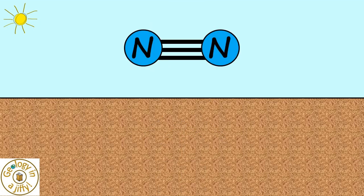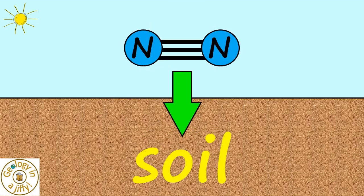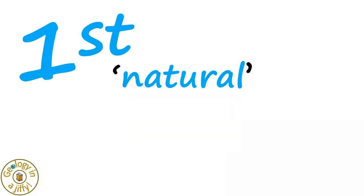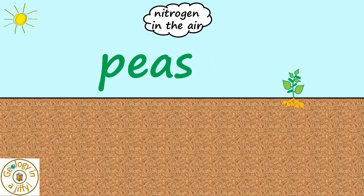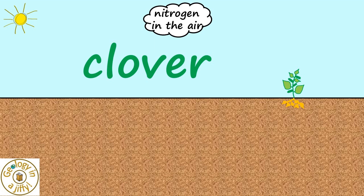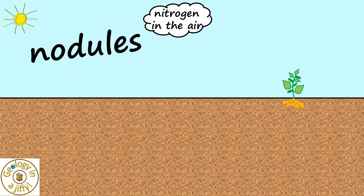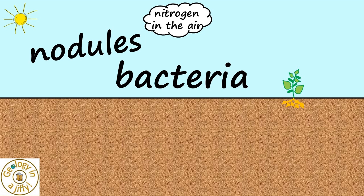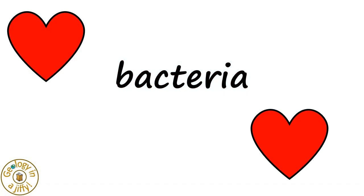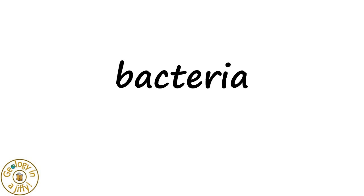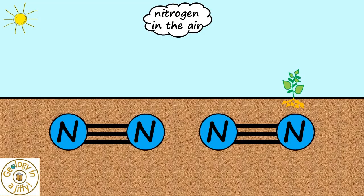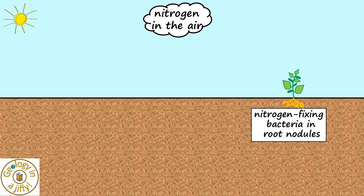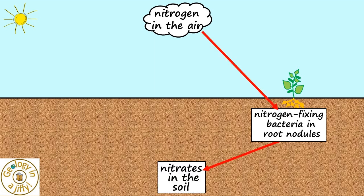To get nitrogen from the air into the soil can be achieved by one of six ways. The first is a natural way using plants called legumes, which include peas, peanuts, and clover. These legumes have nodules in their root systems where bacteria live, and these bacteria love nitrogen. These bacteria lock or fix the nitrogen into the soil, with the nitrogen-fixing bacteria in root nodules helping make nitrates in the soil.